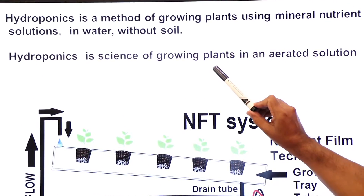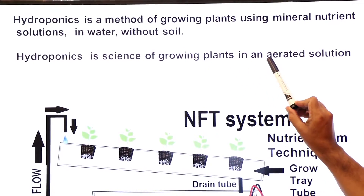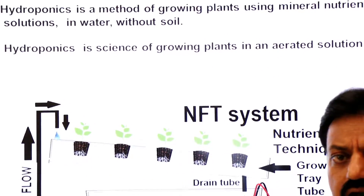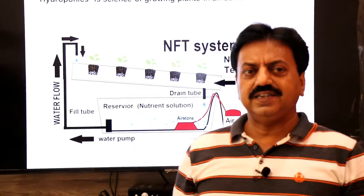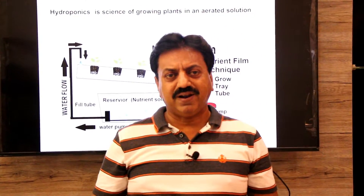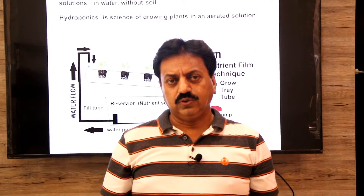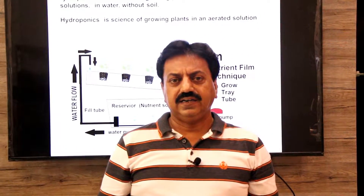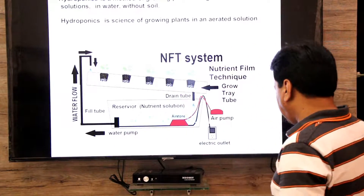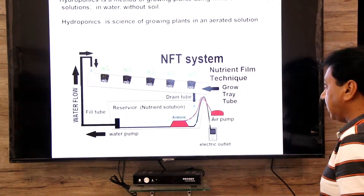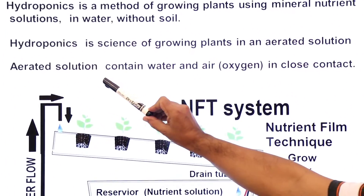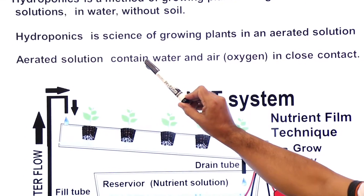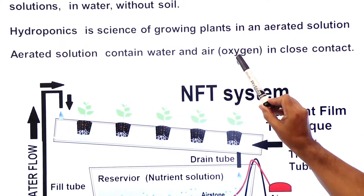Hydroponics is the science of growing plants in an aerated solution. Hydroponics means growing plants in an aerated solution. Now we will discuss what an aerated solution is. An aerated solution is a solution that contains water and air — meaning oxygen — in close contact.